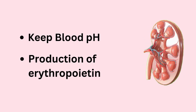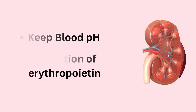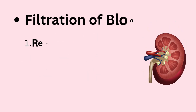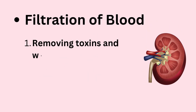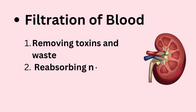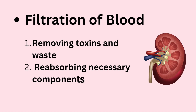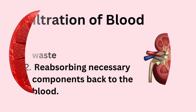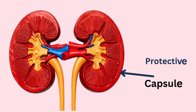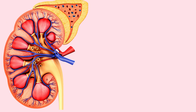The most important function is the constant filtering of blood, removing toxins and waste, while reabsorbing necessary components back to the blood. Each kidney is protected by a tough outer capsule. The kidney has a small opening on the inner concave side called the renal hilum.